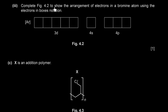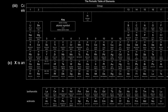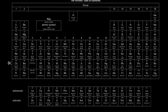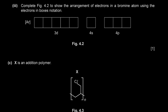Complete the electrons in boxes notation for bromine. From the periodic table, bromine is in group 17 (halogens), so its configuration ends with 4p⁵. The full configuration beyond argon is: [Ar] 3d¹⁰ 4s² 4p⁵.